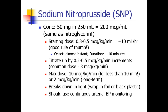Sodium nitroprusside comes in the same concentration as nitroglycerin. We usually start with a dose of about 0.3 to 0.5 micrograms per kilogram per minute — again, that's about 10 mLs an hour — and then titrate up to a common dose of around 2 to 3 micrograms per kilogram per minute. Nitroprusside has a maximum dose of about 10 micrograms per kilogram per minute for very short term use of less than 10 minutes, or 2 micrograms per kilogram per minute for long-term use — and the concern is cyanide toxicity. This drug breaks down in light, so the tubing and bag must be wrapped in black plastic or foil, and patients should have continuous arterial blood pressure monitoring.